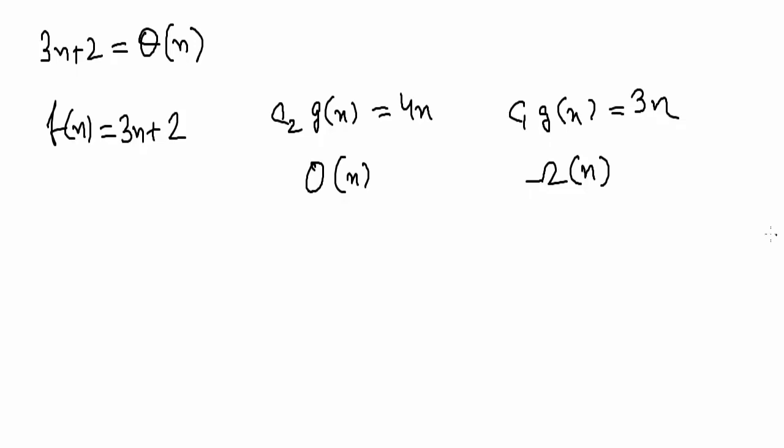For theta it was something like this: 3n plus 2 was less than or equal to 4n for all values of n greater than or equal to 2. This was for order of n, that is c2 g(n).